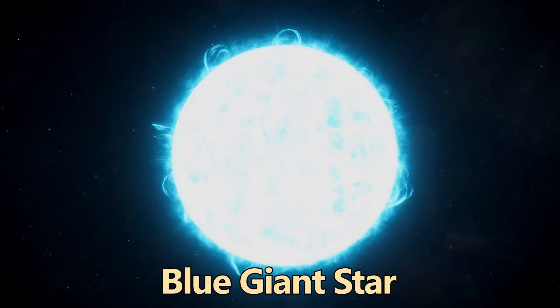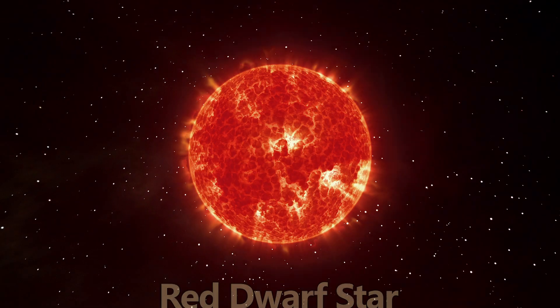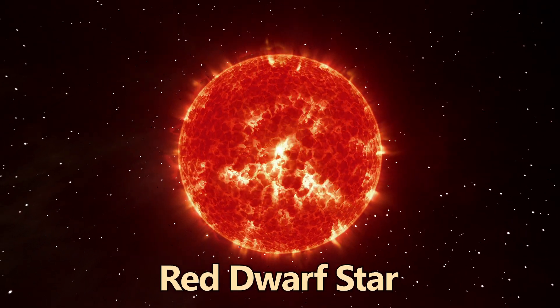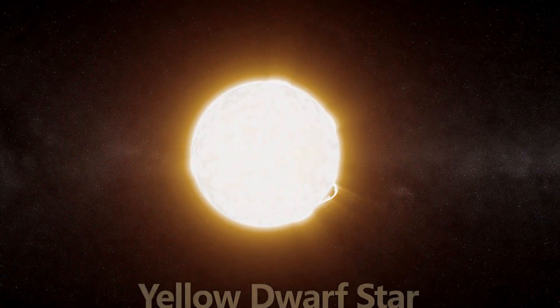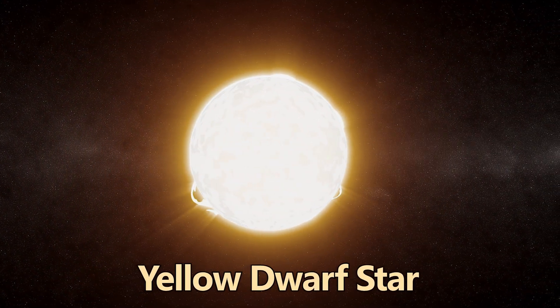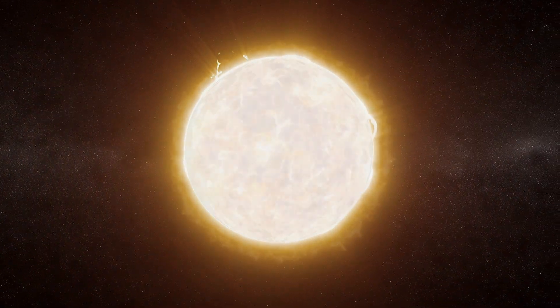There are also blue giants, massive and hot stars that burn through their fuel quickly, and red dwarfs, small and cool stars with incredibly long lifespans. Yellow dwarfs, such as our sun, are stable and emit white light, though they may appear yellow due to atmospheric scattering.